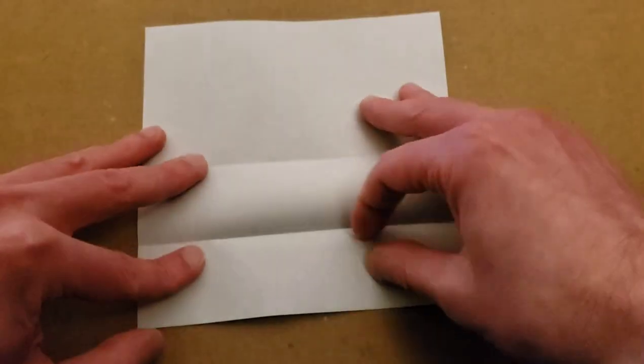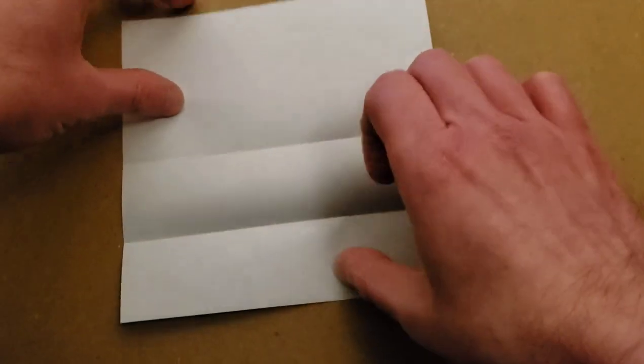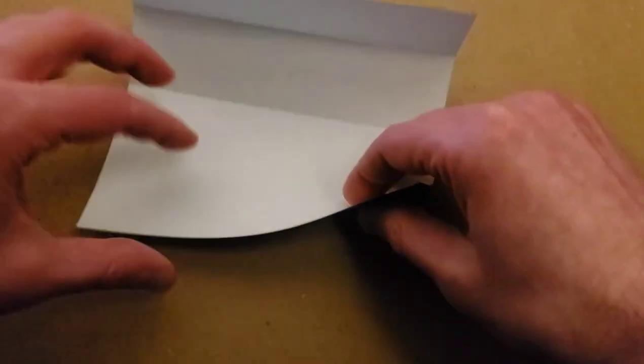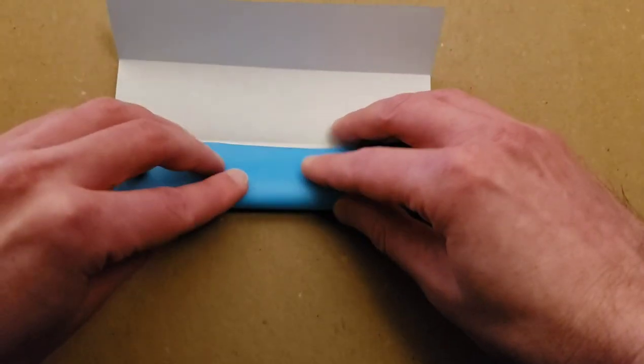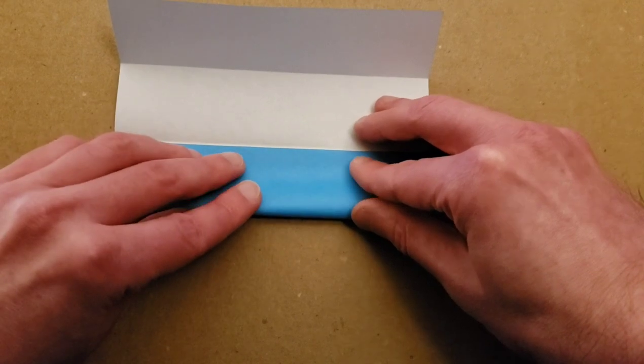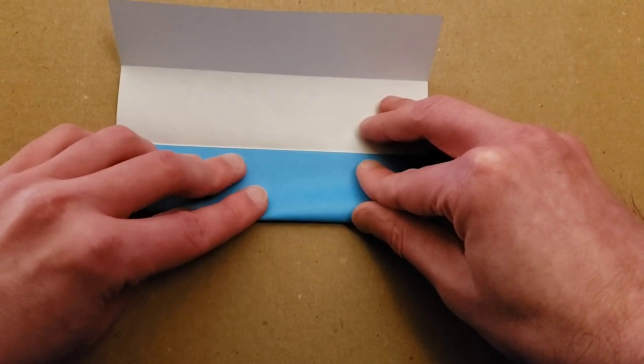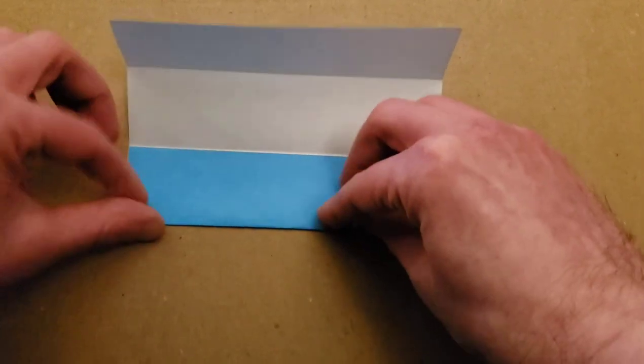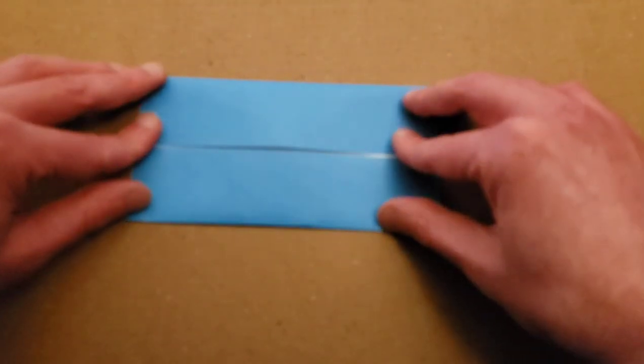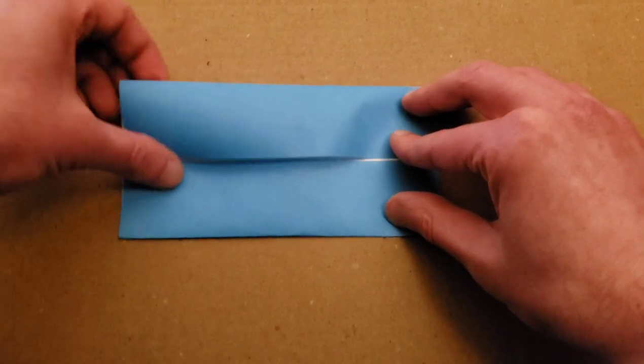And we're going to fold the top and the bottom to that center line. And you don't have to unfold this, but I like to see the crease better. So I'm going to fold the bottom to that center crease again. And then fold that back down, and then flip your paper over.